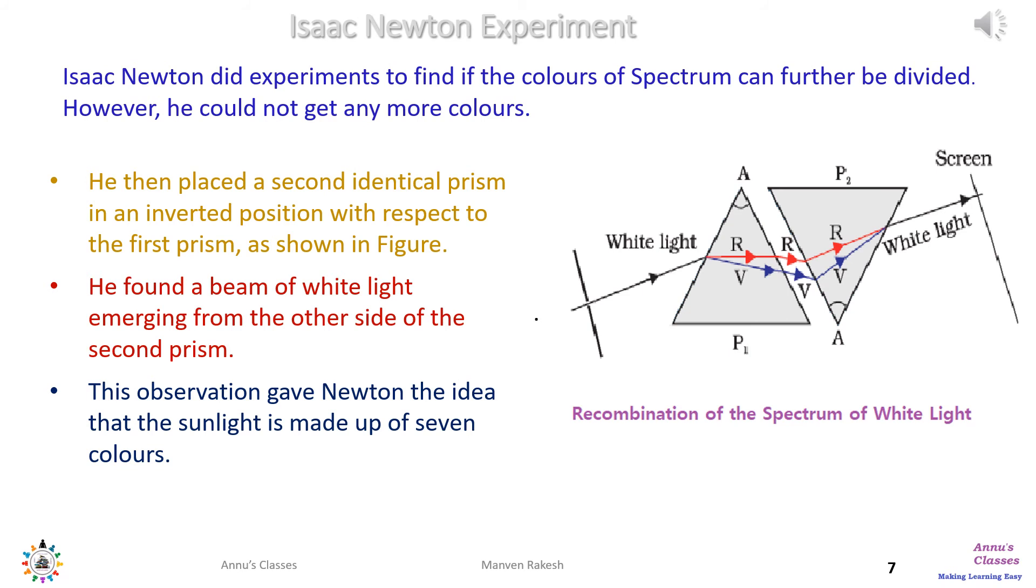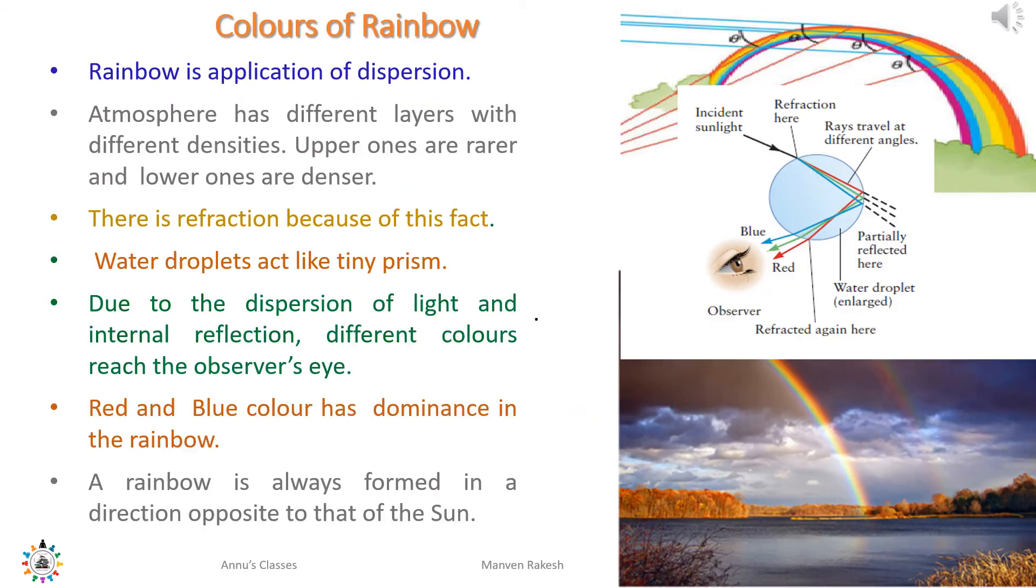The practical application of dispersion is a rainbow in nature. This happens because the atmosphere has different layers with different densities. Upper ones have rare density, and as we move down the densities increase. This causes refraction.